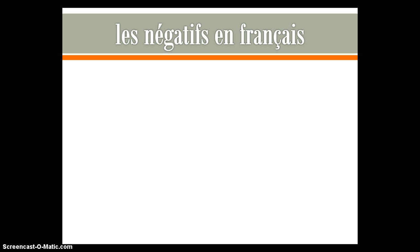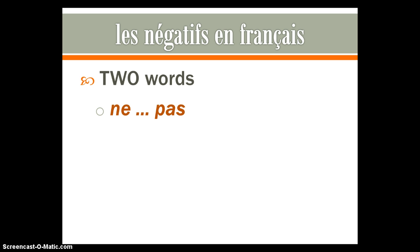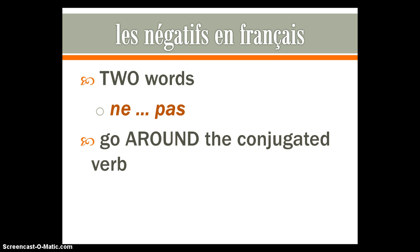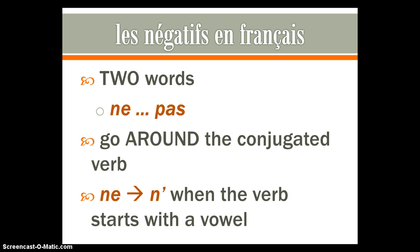So en français, when we go to make a sentence negative, here's what we have to remember. Unlike in English — where I would say 'I do not go to the movies' or 'I am not at the house' — in French, we need two words to make a sentence negative. We need a ne and we need a pas. What we do is take ne and pas and put them around the conjugated verb. One little thing to remember: ne becomes an apostrophe if the verb starts with a vowel.